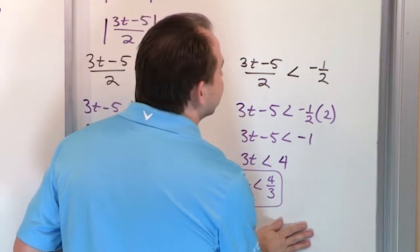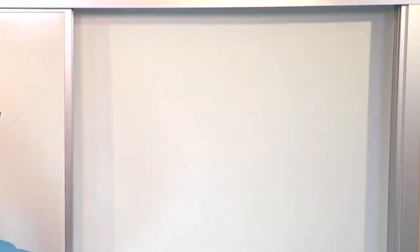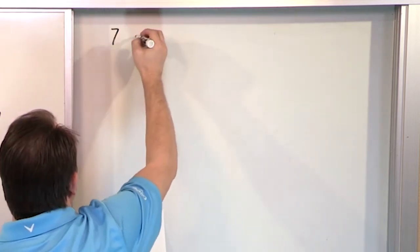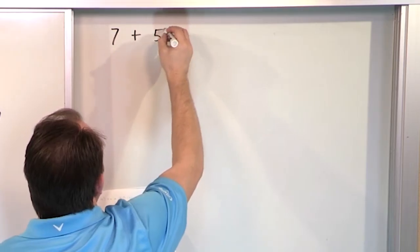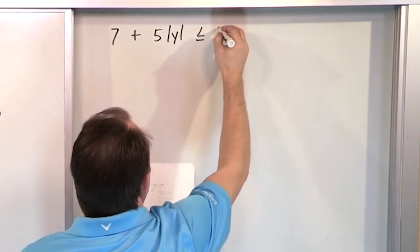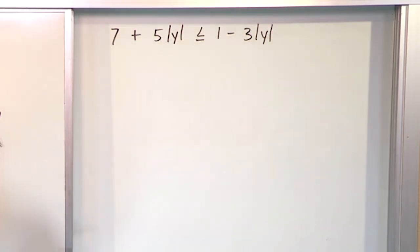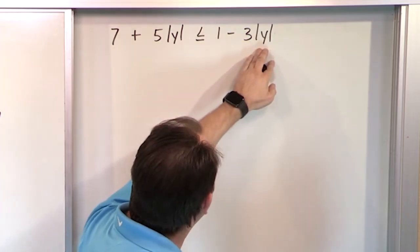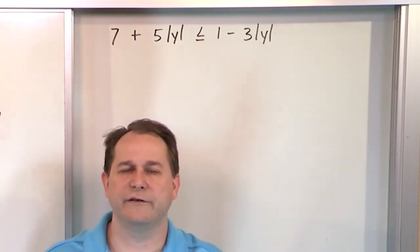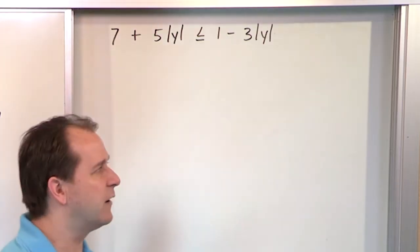Our last problem in this lesson is interesting because the solution looks a little bit weird — but the problem itself is not so hard. You have 7 plus 5 times the absolute value of y, less than or equal to 1 minus 3 times the absolute value of y. Here you have the variable in two different locations with absolute values in two places. All you need to do is move everything over to one side and solve it as usual.